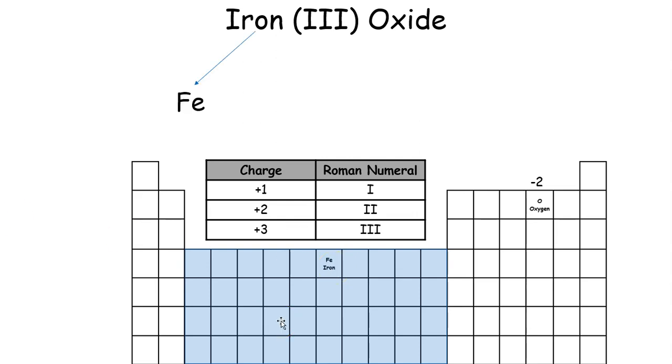But the thing about transition metals is that they can have multiple charges. We can't look at the periodic table and say it has a plus 1, plus 2, or plus 3 charge. We actually have to look at the name.